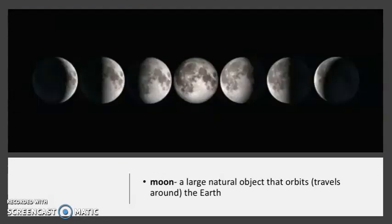The large, round object in the night sky that is sometimes visible during the day is the Moon. It is actually a large, natural object that orbits or travels around the Earth. Like the sun and the stars, the Moon moves in a pattern as well. The Moon is the second brightest object in the sky that we can see from Earth. The phases of the Moon are also a pattern.